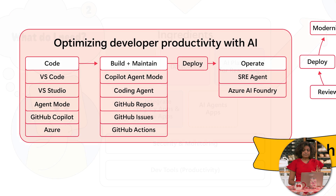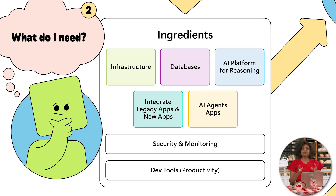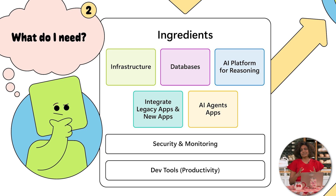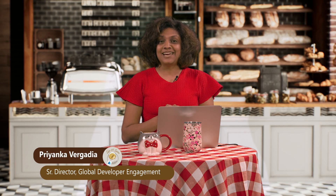With that, here are really the ingredients to think about when building an AI application on Azure: infrastructure, databases, your AI reasoning models, how you connect them with the external world and AI agents, along with security, monitoring, and your developer tools to make all of this come to life. Hopefully this was helpful to demystify the Azure platform for building AI apps. I'll see you in the next episode of Sip and Sync — let us know in the comments what you'd like to see next. Thank you.